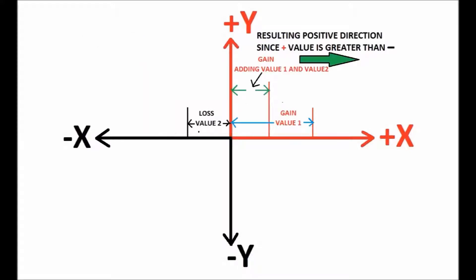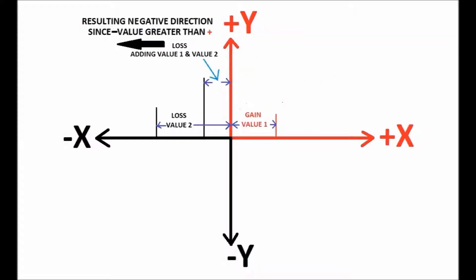Adding gain and loss values results in gain means the gain is higher than the loss, therefore we are in the gain direction — that is positive. Adding gain and loss results in loss means the loss is higher than the gain, therefore we are in the loss direction — that is negative.